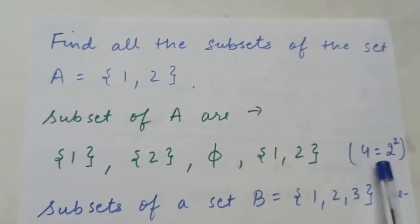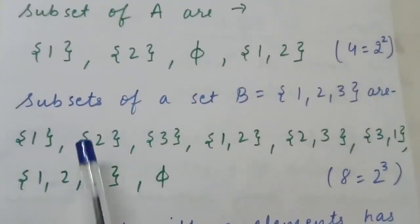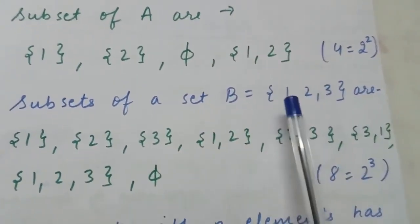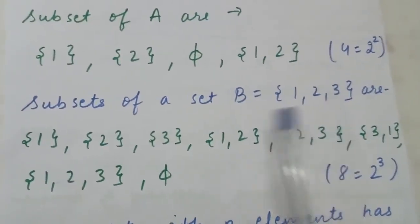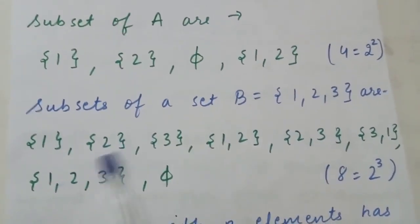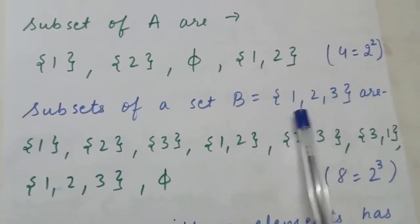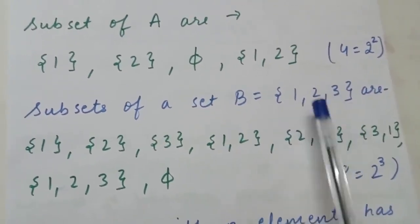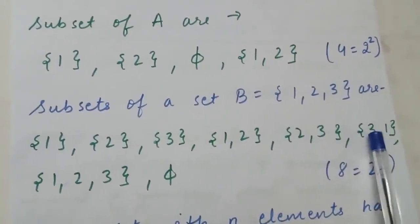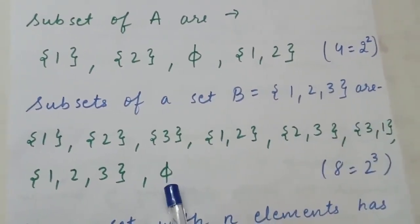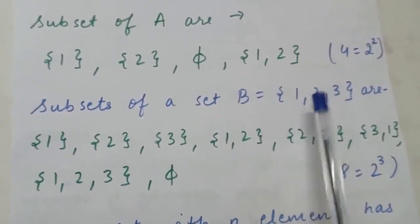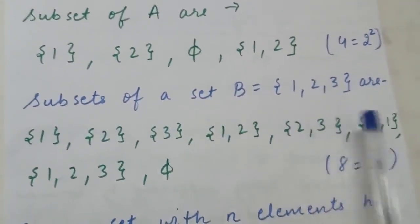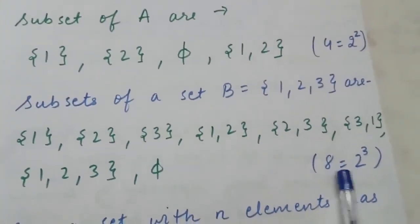So to find subsets of A, take one element at a time, then two elements at a time, plus φ and the set itself. The total subsets of A are four, which is 2². Now for set B = {1, 2, 3}: take one element at a time — {1}, {2}, {3}; then two elements at a time — {1,2}, {2,3}, {3,1}; plus φ and B itself. Total subsets of B are eight.